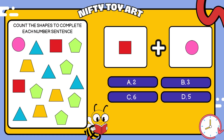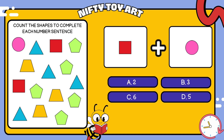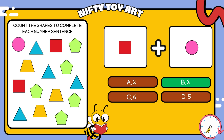I have a square plus circle. How many all together? That's right, three.